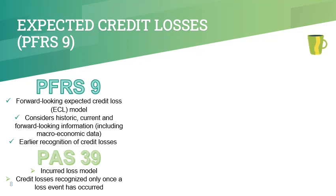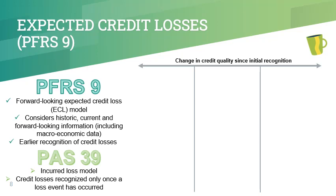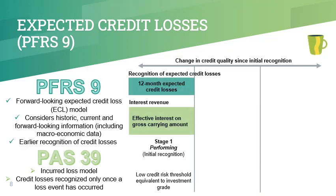Under the general approach of the ECL model, an entity must determine whether the financial asset is in one of three stages in order to determine both the amount of expected credit loss to recognize and how interest income should be recognized. Stage 1 is where credit risk has not increased significantly since initial recognition. For financial assets in Stage 1, entities are required to recognize 12-month ECL and recognize interest income on a gross basis — meaning interest is calculated on the gross carrying amount of the financial asset before adjusting for ECL. For simplicity, a financial asset is considered in Stage 1 if it has a low credit risk threshold equivalent to investment grade.